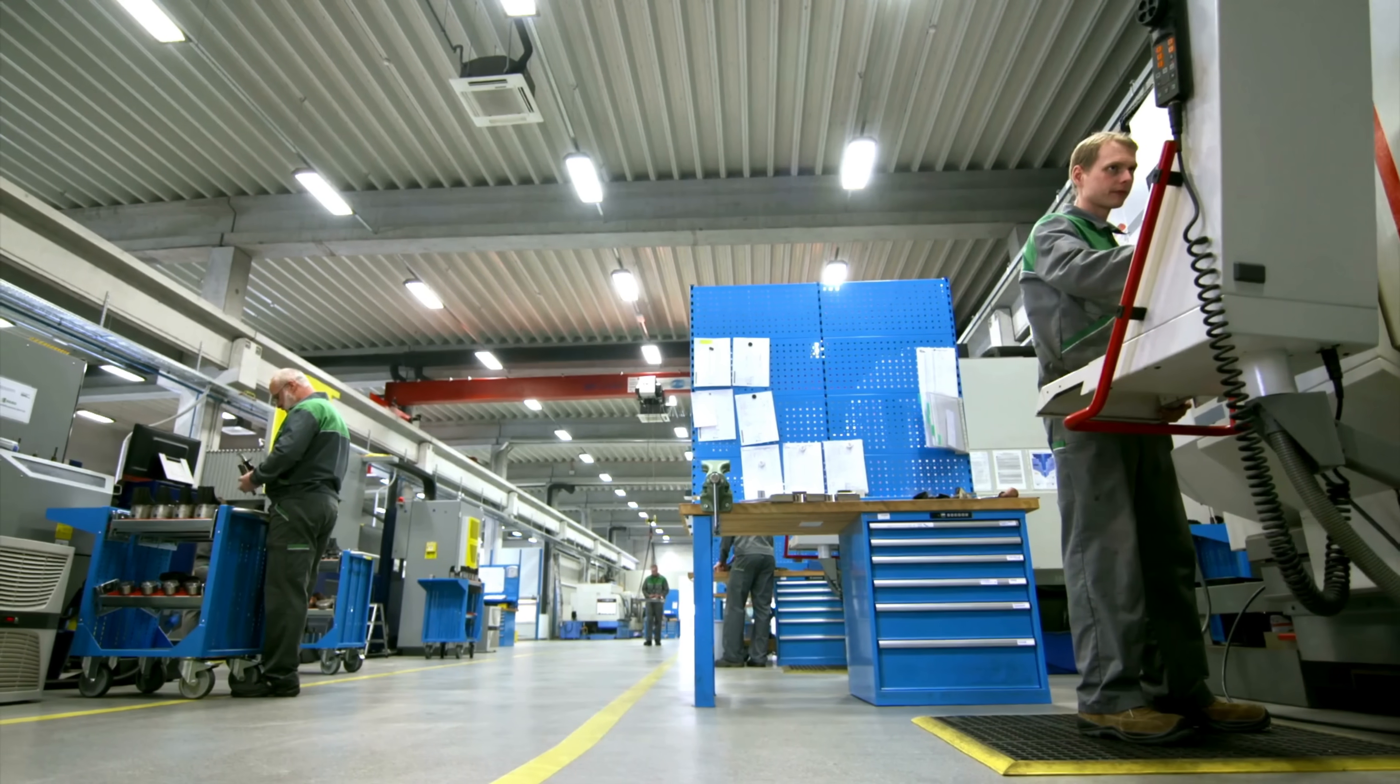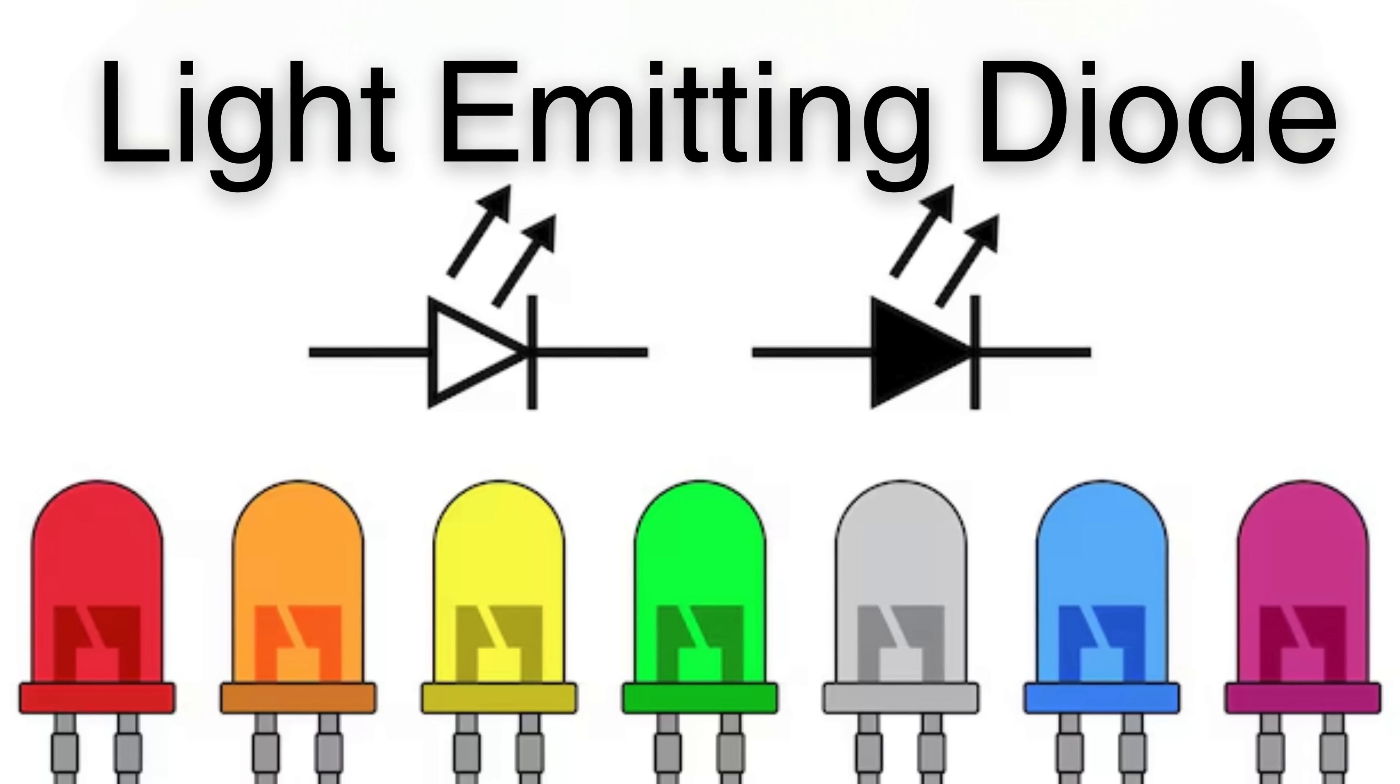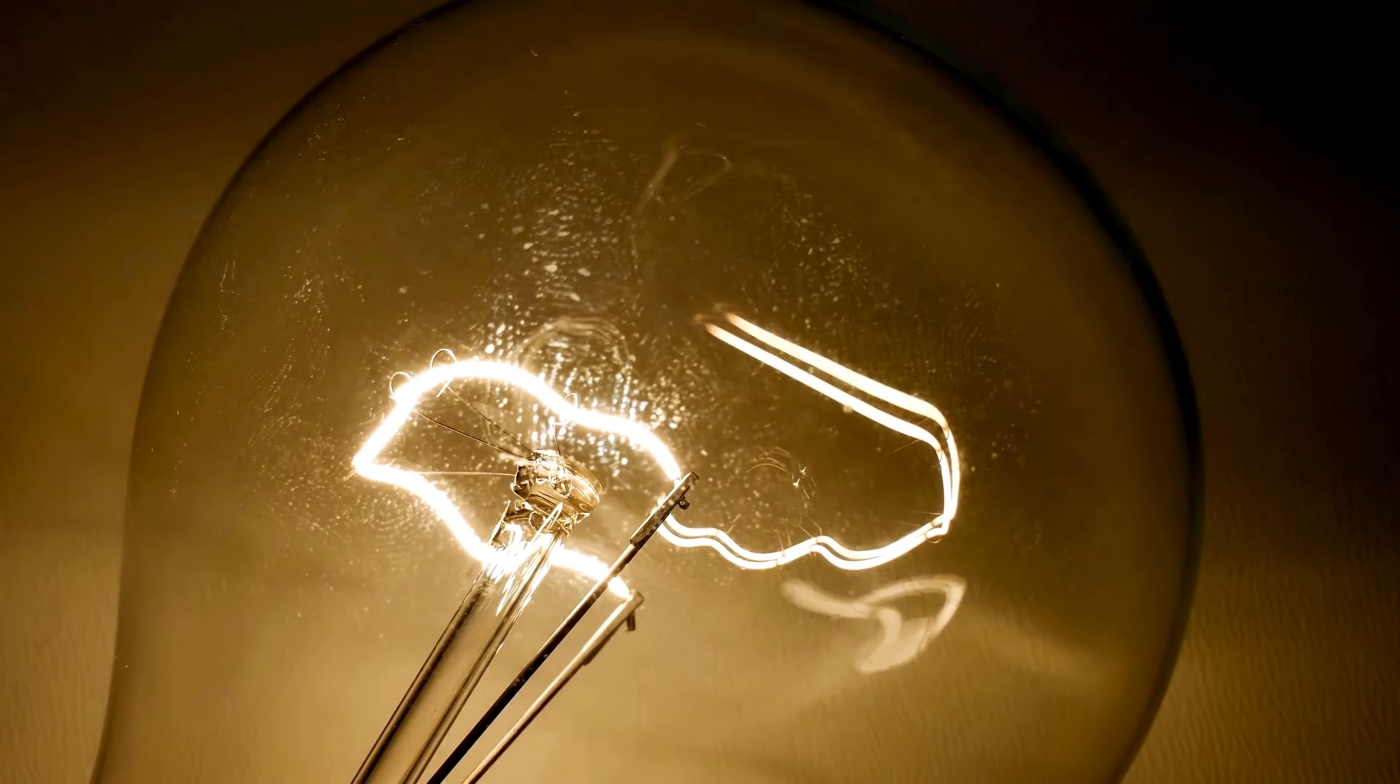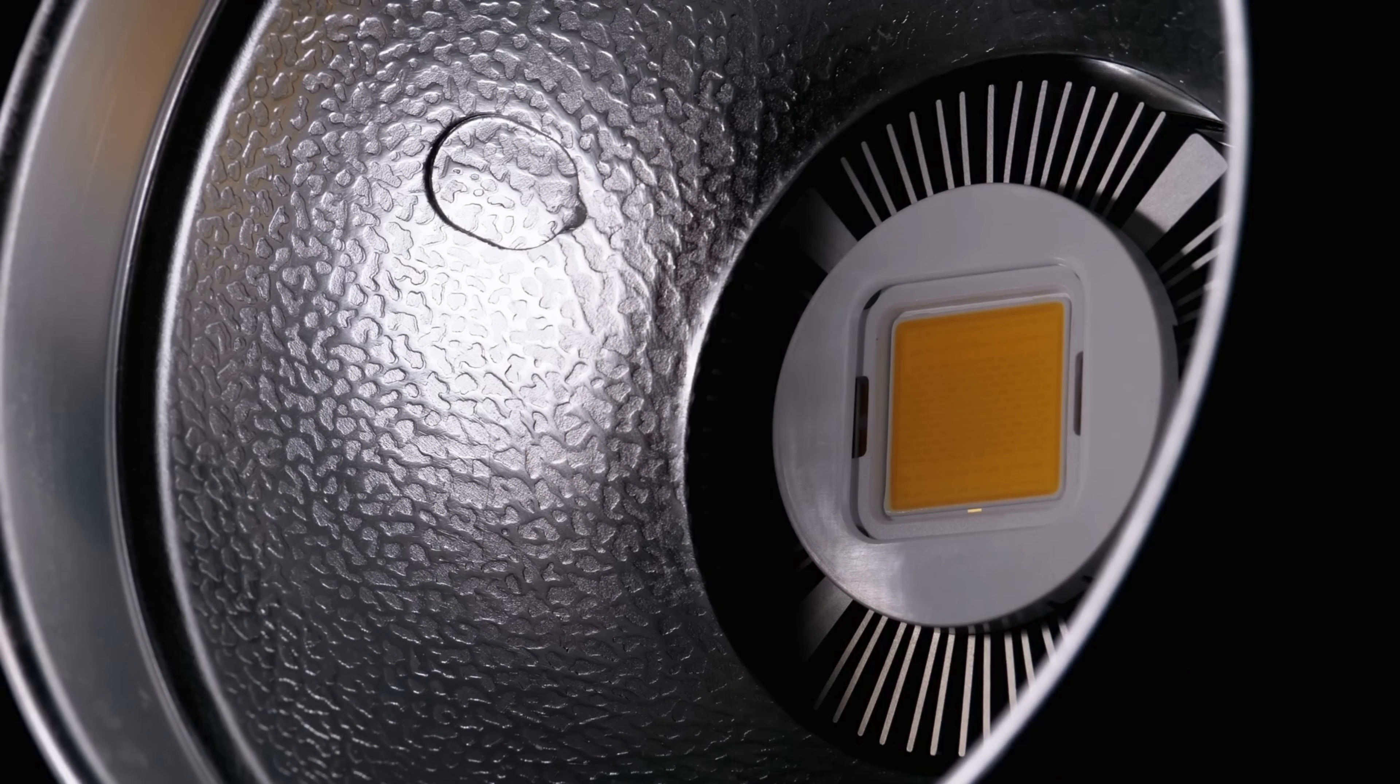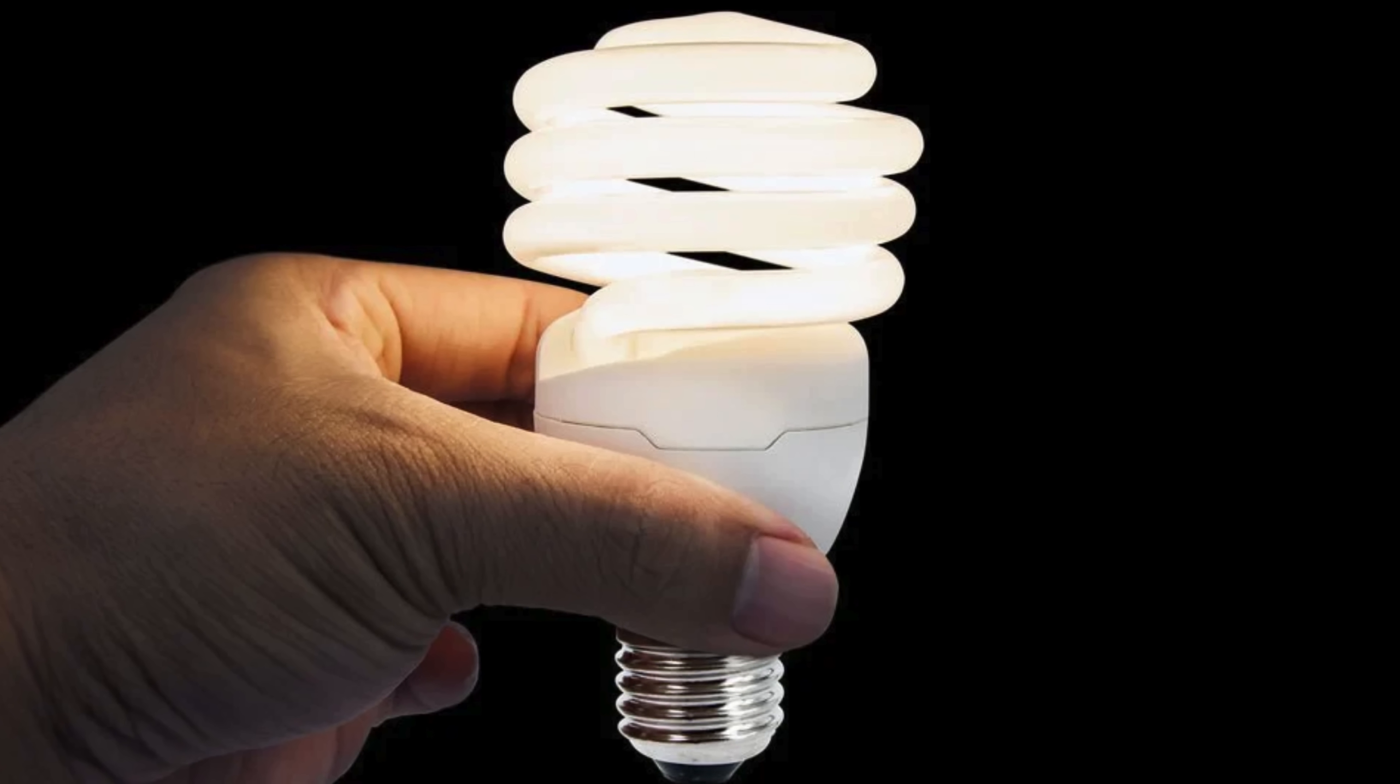Before we dive into the manufacturing process, let's quickly go over what an LED actually is. LED stands for light-emitting diode, a semiconductor device that emits light when an electric current passes through it. Unlike traditional incandescent bulbs that generate light by heating a filament, LEDs work by electroluminescence. This means they produce light without producing much heat, making them far more energy efficient.